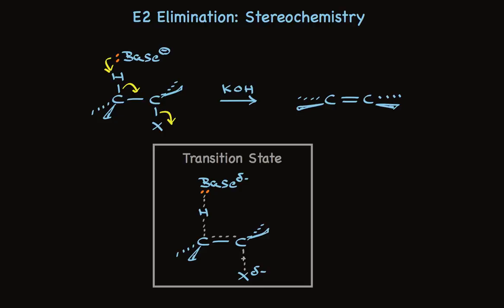Because the proton and the halide need to assume the anti-arrangement, as I've shown here, there's a very fixed arrangement for the other atoms or groups that are attached to the two carbons.